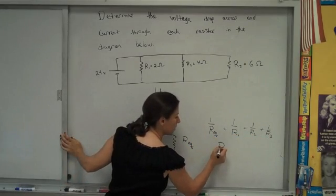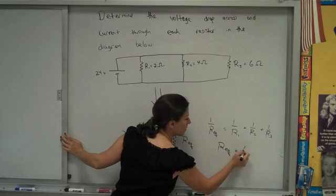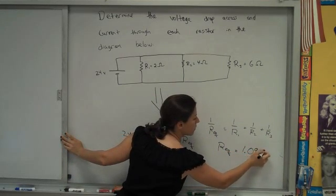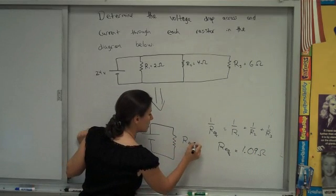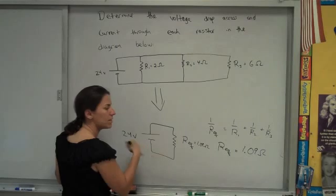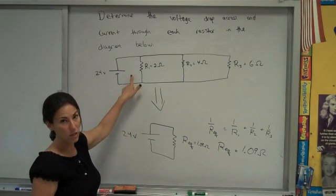I've done that already. And the equivalent resistance is 1.09 ohms. So if I put in this circuit a 1.09 ohm resistor, I'm going to get the same current for the battery as in this circuit.